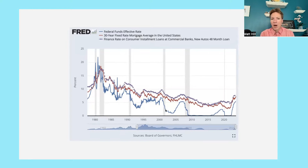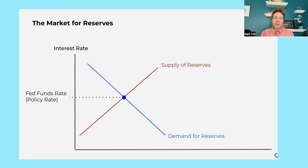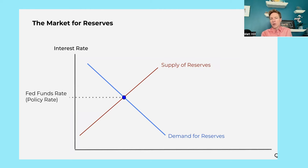Here's a slide showing how the fed funds rate (the blue line) is really related to other rates you might care about: the mortgage rate in red, and the auto loan rate in purple. We're going to use our standard supply and demand graph to understand how the Fed can influence the fed funds rate.